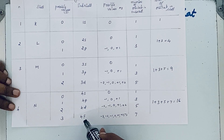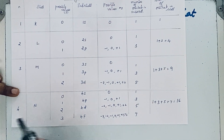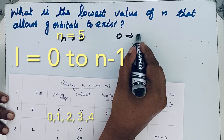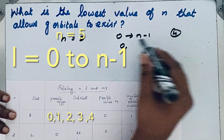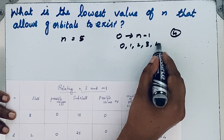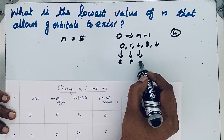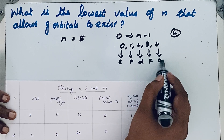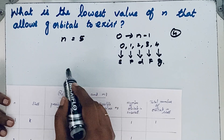So up to n equal to 4 we have 4f, but we want the answer for the g orbital. Since g comes after f, we need l equal to 4. When n is equal to 5, the possible l values go from 0 to 4, meaning l equal to 4 corresponds to the g orbital. So when n is equal to 5, there is the possibility for g orbitals to exist.